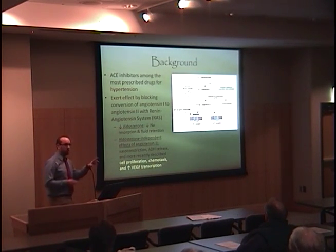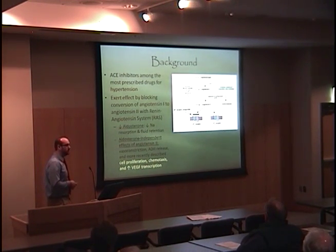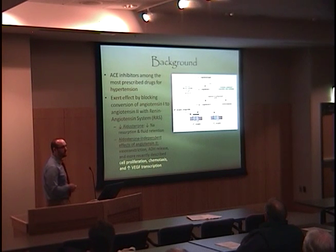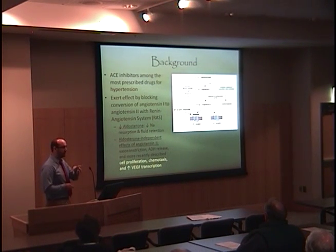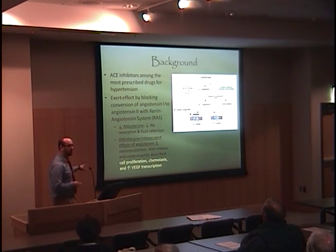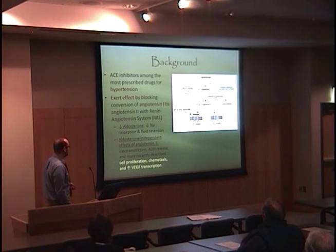Angiotensin 2 has two broad areas of effects. One is by increasing aldosterone expression, and aldosterone works in the kidney to increase sodium resorption, thereby increasing fluid volume and blood pressure. It also has several aldosterone-independent effects, including vasoconstriction and antidiuretic hormone release, which acts on the distal portions of the nephron to lead to free water resorption. More recently described actions include cell proliferation, chemotaxis, and increased VEGF transcription — VEGF being vascular endothelial growth factor.